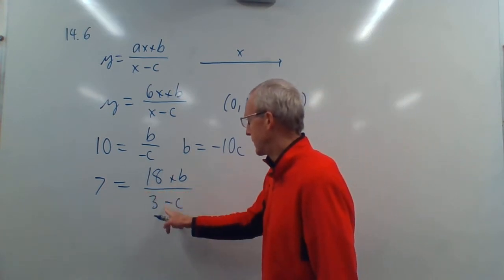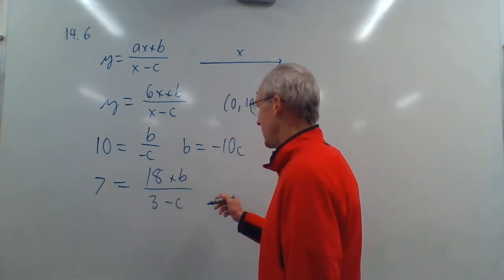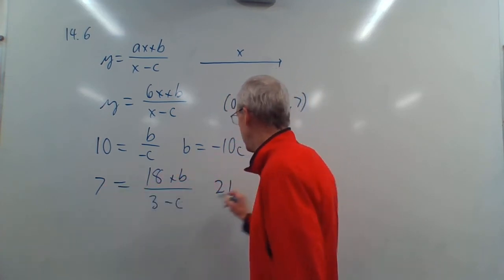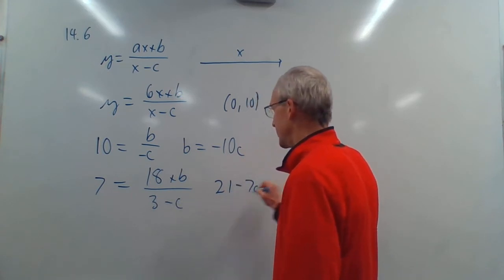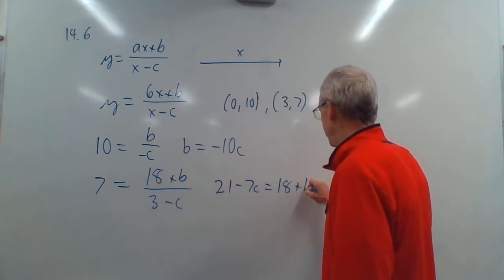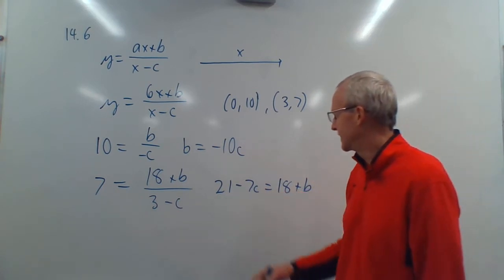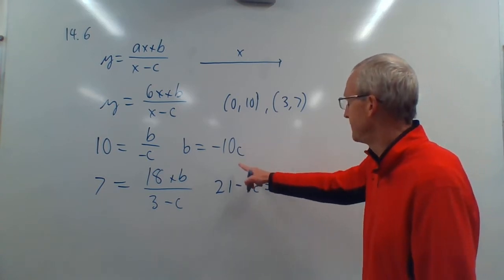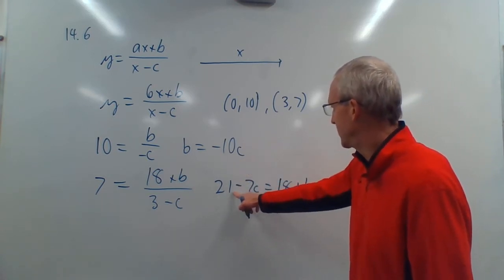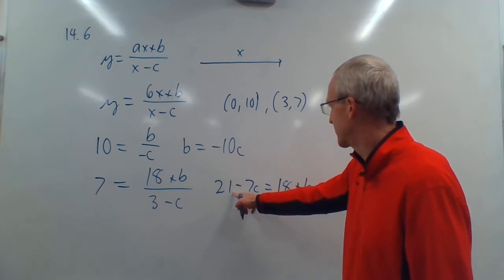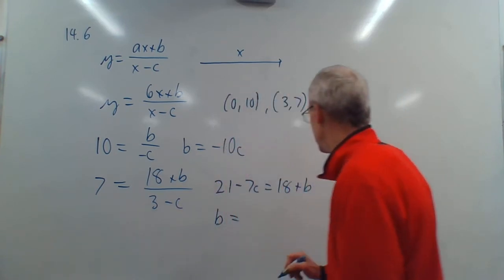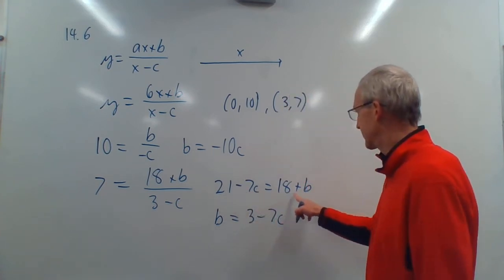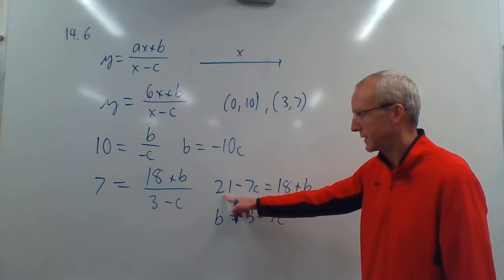Let's multiply the 3 minus C over here. So now we have 3 times 7 is 21. So 21 minus 7C is equal to 18 plus B. We can combine the 18 and the 21, right? Let's put the B by itself like we did up here. So B by itself with the 18 over here. Subtract 18 from 21. That's 3. So I get B is equal to 3 minus 7C, because the B by itself is 18. 21 minus 18 is 3.